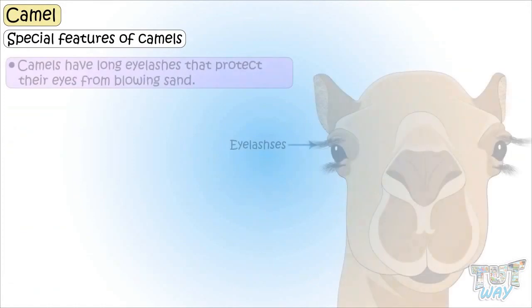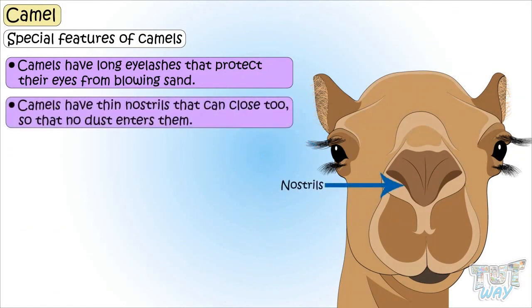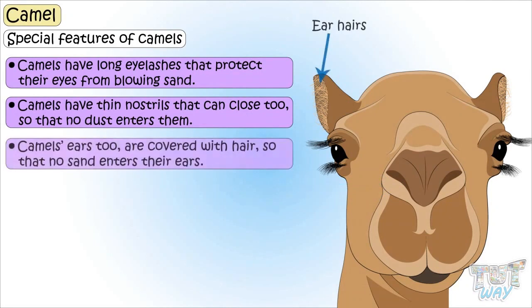Let's see the special features of camels that help them adapt to such environments. Camels have long eyelashes that protect their eyes from blowing sand. Camels have very thin nostrils that can close so that no dust enters them. Camels' ears are also covered with hairs so that no sand enters them.